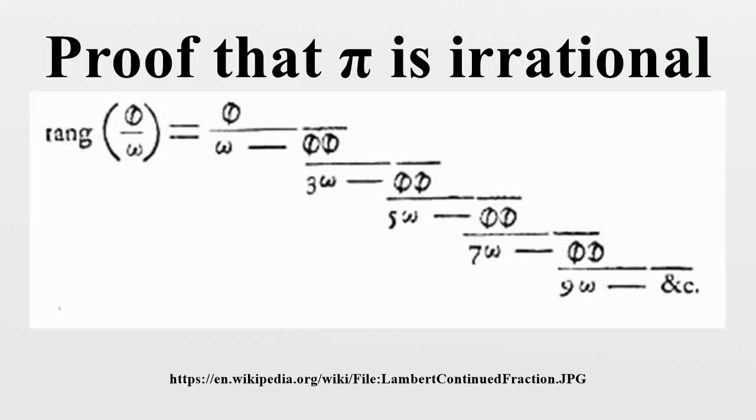In the 18th century, Johann Heinrich Lambert proved that the number pi is irrational. That is, it cannot be expressed as a fraction a/b, where a is an integer and b is a non-zero integer.